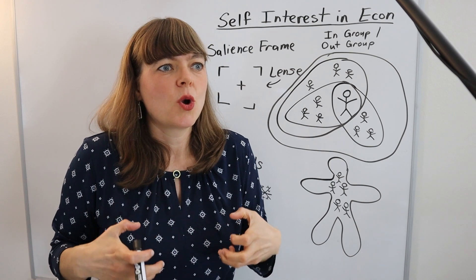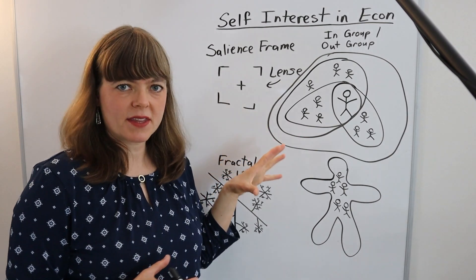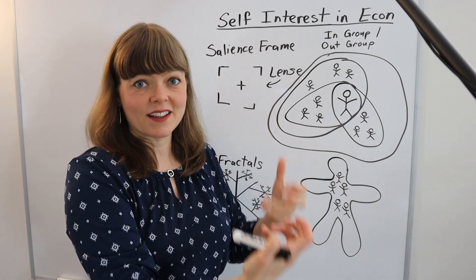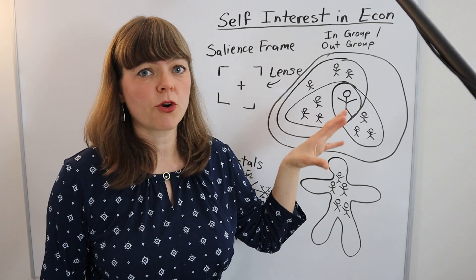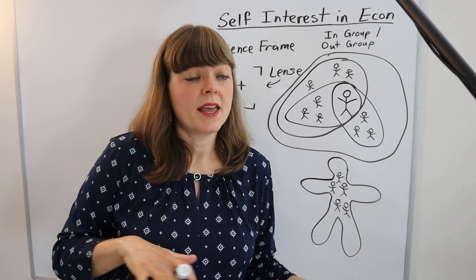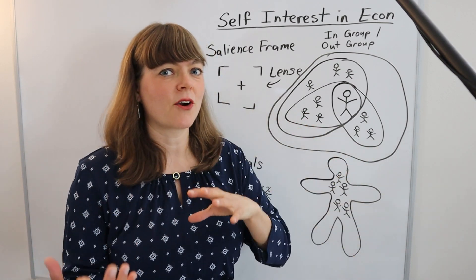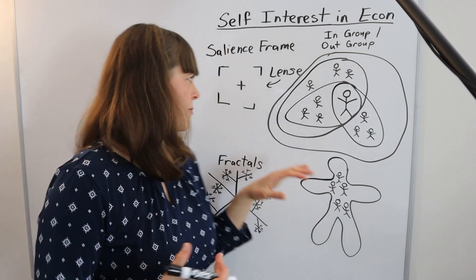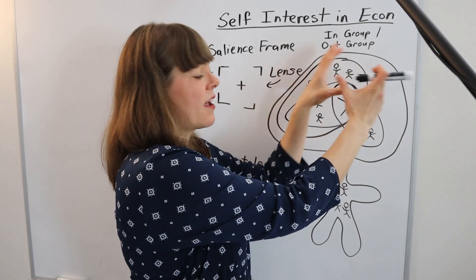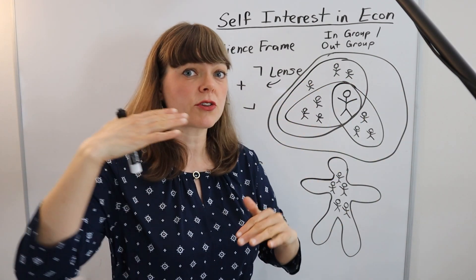In economics, the salience frame applies to a person's motivational forces — what is driving any given behavior at any given point in time. Many things make something salient: the news can make certain in-groups and in-group/out-group conflicts salient. A threat to any particular in-group may make that group more salient. Your salience frame may depend on mood, urgency, or the social distance between you and a given group. These frames shift throughout the day but also have some stability over time.